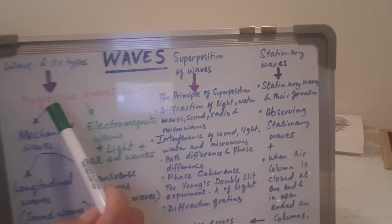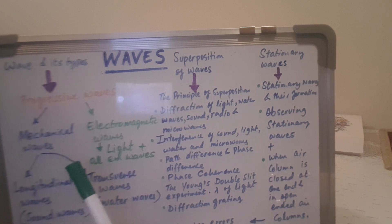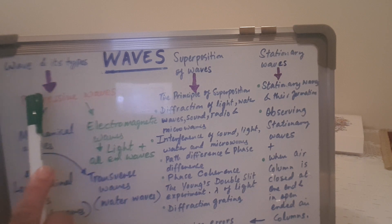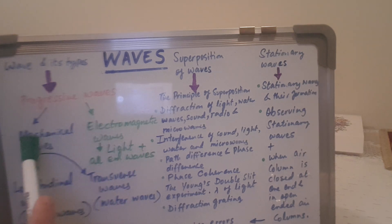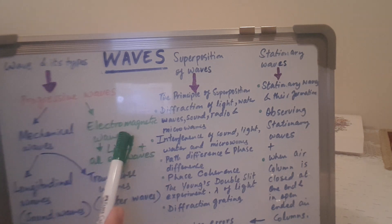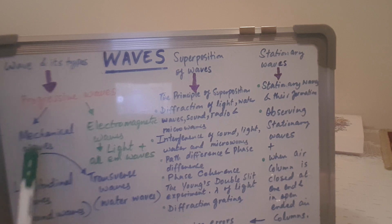In waves, we will study different chapters. First, it will be about wave types and the Doppler effect. We begin with progressive waves, then their division into two categories: mechanical waves, which require a medium for propagation, and electromagnetic waves, which do not need a medium and travel through vacuum as well. Examples of electromagnetic waves include light waves.